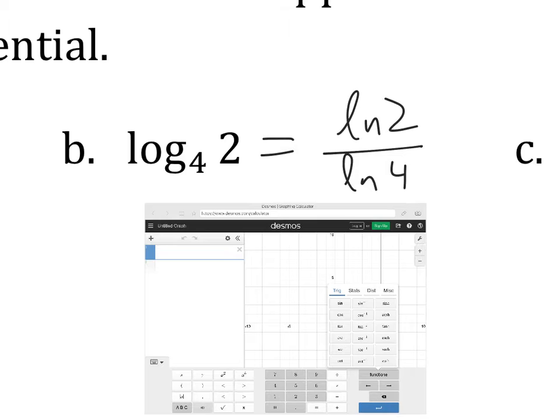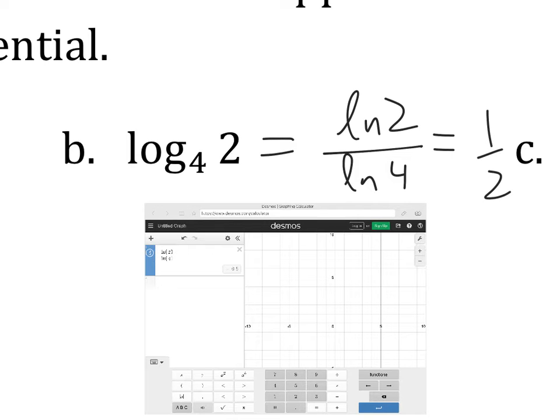We've got the natural log under miscellaneous natural log of 2, close that parenthesis, divided by the natural log of 4. And that is 0.5. Which is what we expect, 0.5 or a half, because 4 to the 1 half power, 1 half power means square root, the square root of 4 is 2.